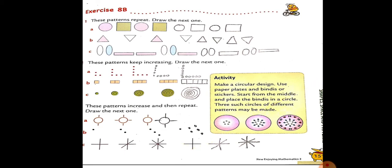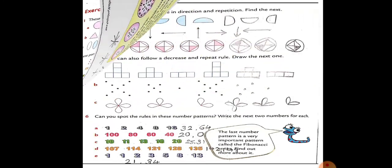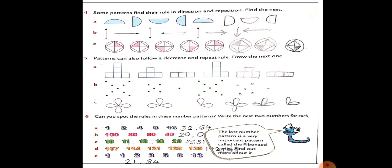Yeh bhi aapko khud se karna hai — Exercise 8B, do it by yourself. Number 4: same to same humne aage kiya waisa, yeh bhi waisa, yeh bhi waisa. Phir jo concept nayi hai woh aap achhe se concentrate karke dekhna. Can you spot the rules in this number pattern? Write the next two numbers: 4, 8...